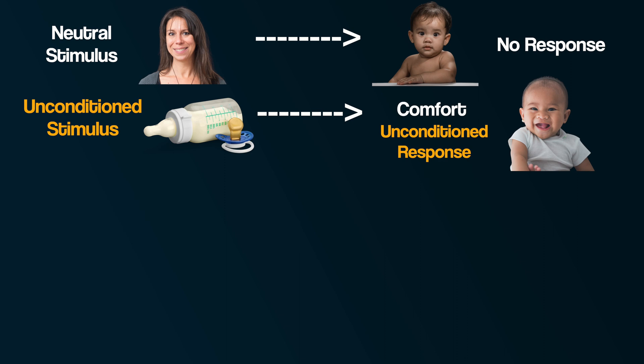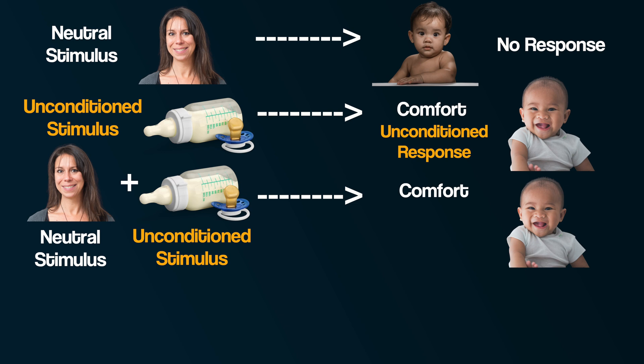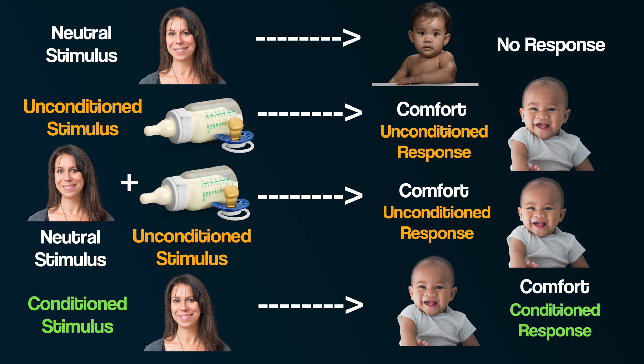If we apply this to attachment, the food — in this case milk — is an unconditioned stimulus, which produces an unconditioned response from the infant. The mother is the neutral stimulus, which produces no response according to behaviourists. Their idea is that when you pair the food with the mother, the mother then becomes a conditioned stimulus — a learned stimulus. The baby wants food and forms an attachment with the mother because she provides the food.